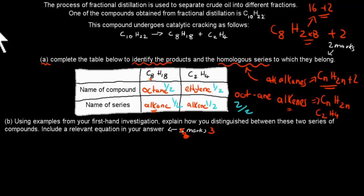For B, we have to talk about a firsthand investigation you would have done in this chapter. And explain how you distinguish between these two series of compounds, so between alkanes and alkenes. How we use that firsthand investigation to distinguish between them. Include a relevant equation.